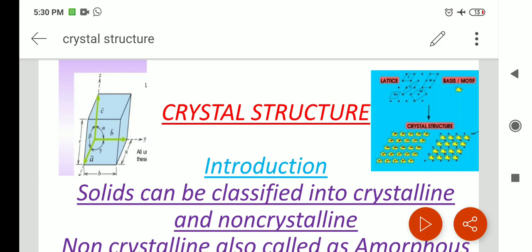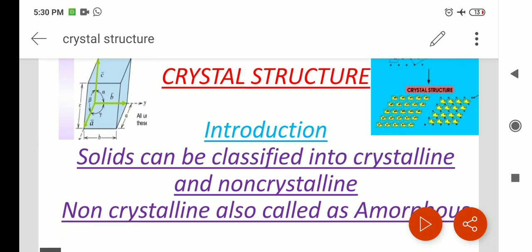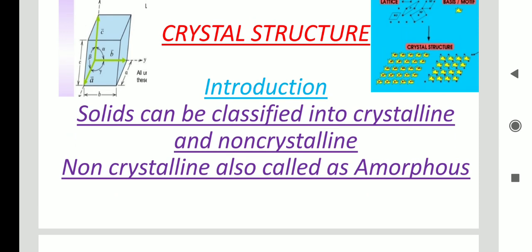Good morning. Welcome to today's topic about crystal structure. Before we move to the topic, we need to know some details. Generally, solid materials are classified into crystalline and non-crystalline materials. In crystalline materials, the atoms are arranged in a periodic manner in all directions. Crystalline material can be considered as a three-dimensional form.